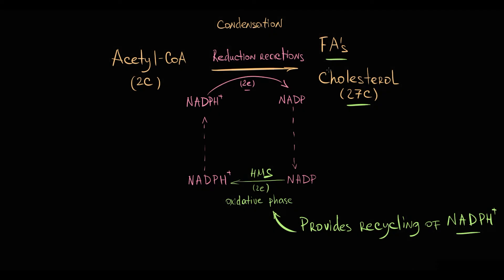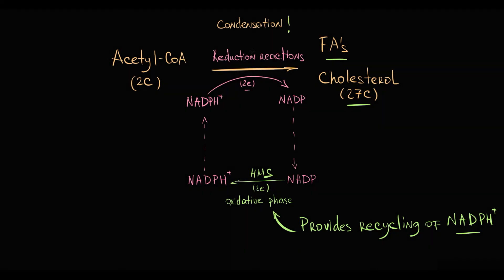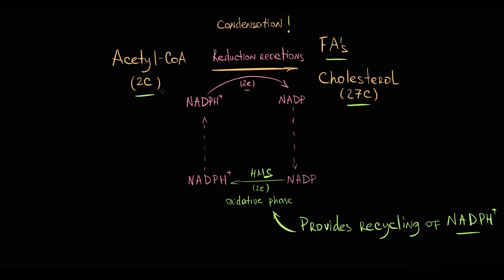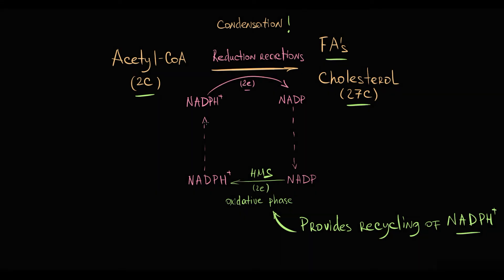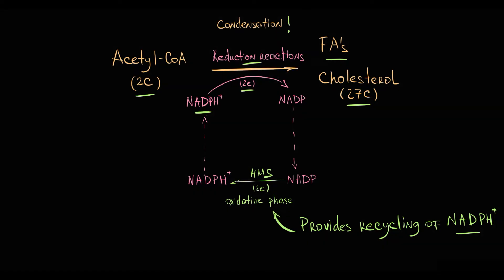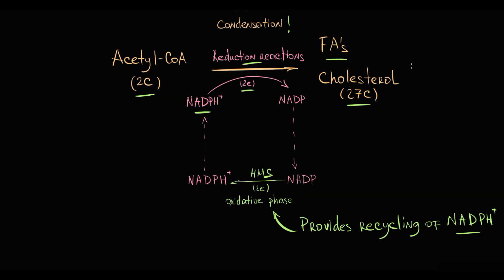To condense multiple acetyl-CoA molecules, the cell, via the Hexose Monophosphate Shunt, must provide numerous NADPH molecules that are used as electron donors in reduction reactions, and this results in production of one large cholesterol or fatty acid molecule.